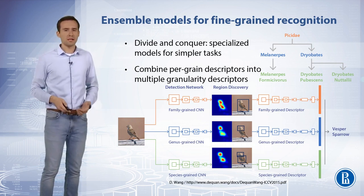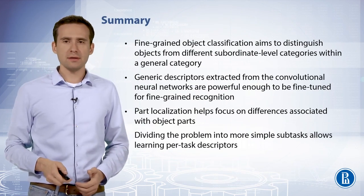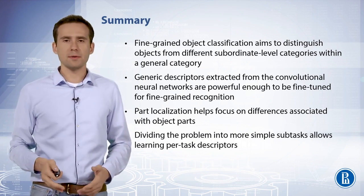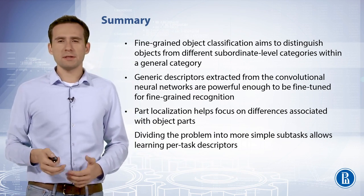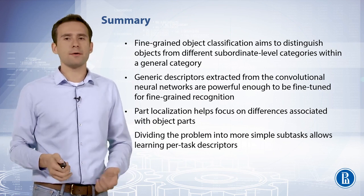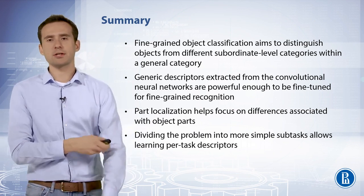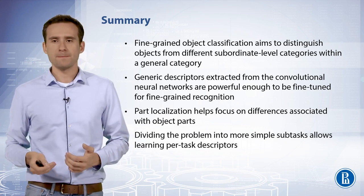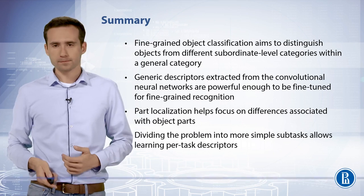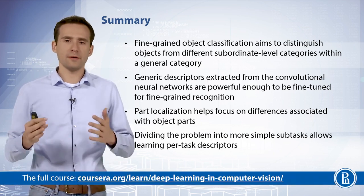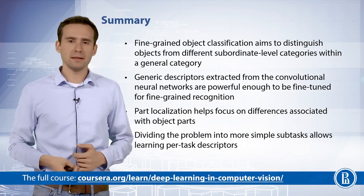To summarize, fine-grained object classification is the task of distinguishing objects from different subordinate-level categories within a general category. Generic descriptors extracted from conventional CNNs are already powerful enough to be fine-tuned for fine-grained recognition, but part localization can help focus on subtle differences connected to object parts. We can also think of dividing the problem into more simple sub-tasks to facilitate learning per-task descriptors.